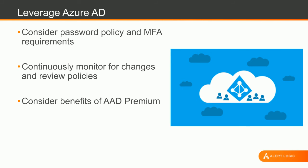Azure AD Premium provides some really good additional security features beyond the MFA for all user accounts. For example, if you are an AAD Premium customer, Microsoft provides some degree of security analytics and alerting on your Azure Active Directory Premium activity. It will alert if users log in from different geographic locations in an impossible period of time — so if I were to log in from here in the UK at 2 o'clock in the afternoon and then someone logged into my account from New York at 3 o'clock in the afternoon, Microsoft would flag that as an anomaly because it's not possible to travel between those two positions in that time.